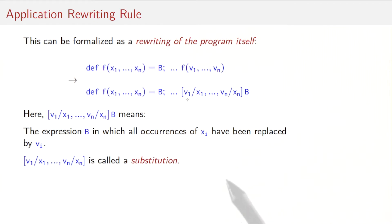This rewriting rule can be formalized by rewriting the program itself. Say you have a program with a function definition def f with parameters x1 to xn and a body b. And then somewhere else you have a function called f applied to value argument values v1 to vn. That program can be rewritten to a program that contains the same function definition. But the function application has now been replaced by the body of f, and at the same time the formal parameters x1 to xn have been replaced by the argument values. This notation v1 for x1, vn for xn is called a substitution. What we mean by it is that all occurrences in b of the values x1 to xn have been replaced by the corresponding values v1 to vn.